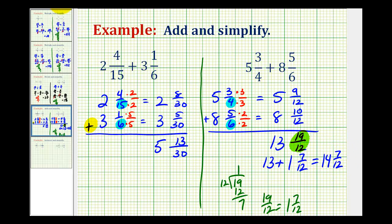So this is the main thing we have to watch out for when adding mixed numbers. When we add the fraction parts, if the fraction is an improper fraction, we have to convert it to a mixed number and then add it to the whole number.